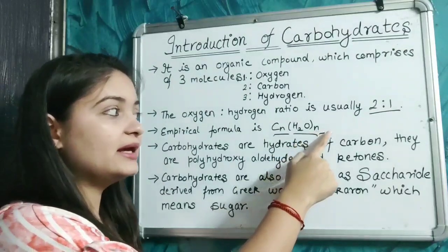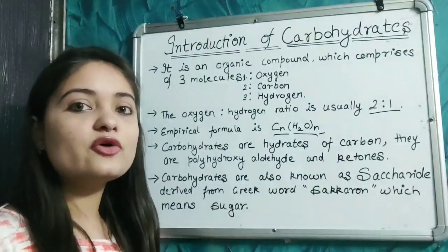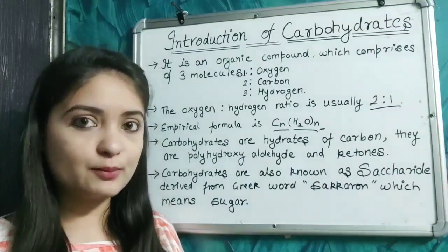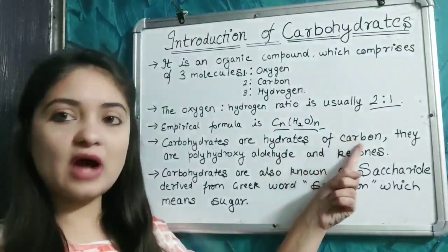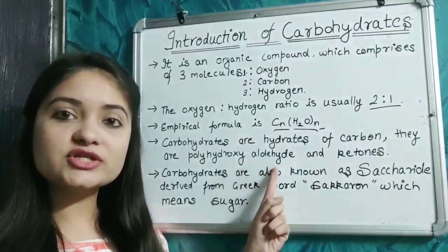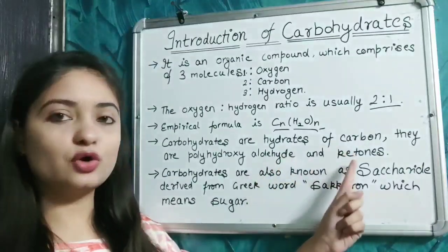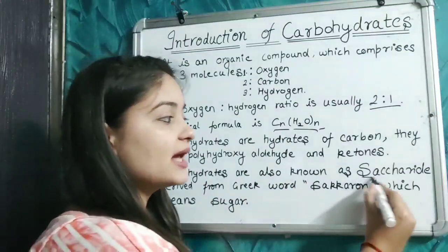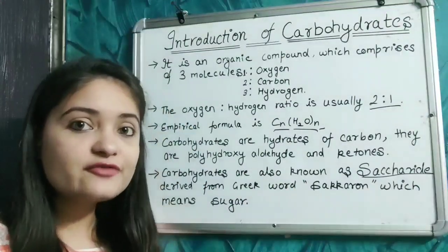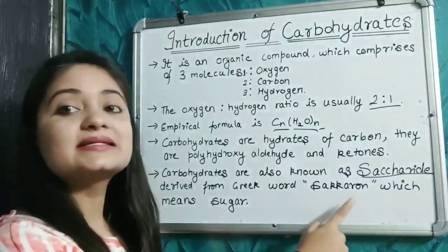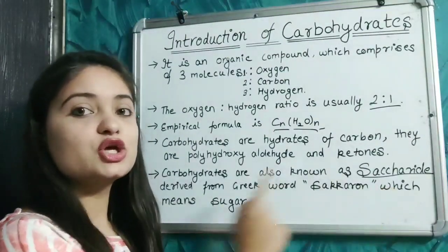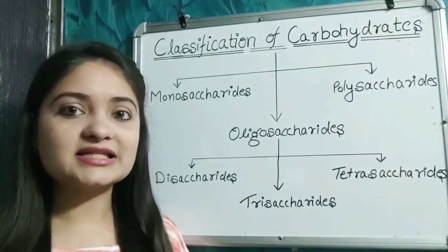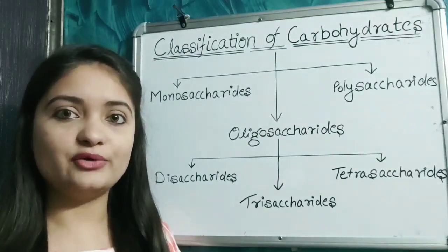Here n represents the number of carbon atoms in that particular compound. Carbohydrates are hydrates of carbon; they are polyhydroxy aldehydes or polyhydroxy ketones. Carbohydrates are also known as saccharides, derived from the Greek word 'sacchar' which means sugar.